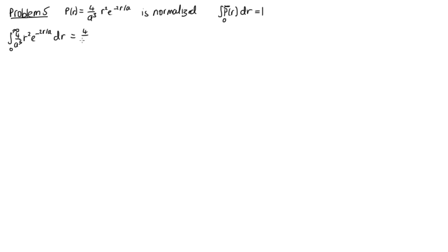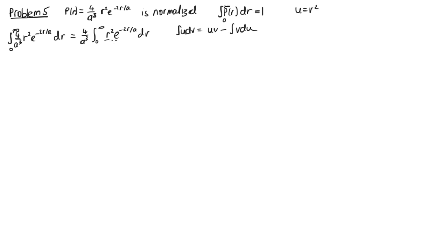We need to evaluate ∫₀^∞ (4/a³) r² e^(−2r/a) dr. Pulling 4/a³ out as a common factor, we need ∫₀^∞ r² e^(−2r/a) dr. To solve this, we use integration by parts: ∫u dv = uv − ∫v du. We set u = r², dv = e^(−2r/a) dr.